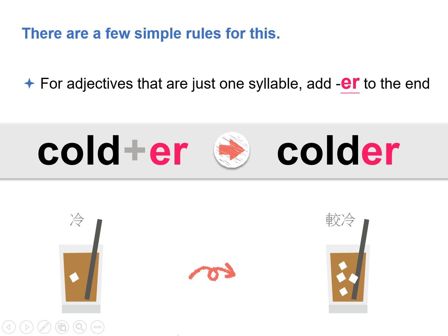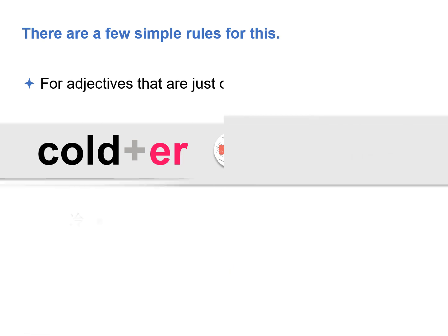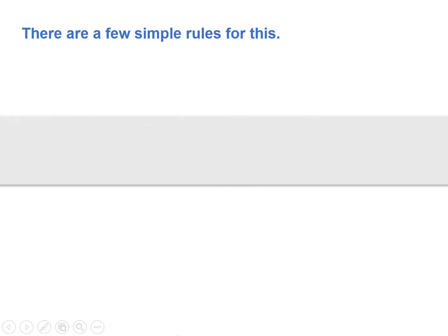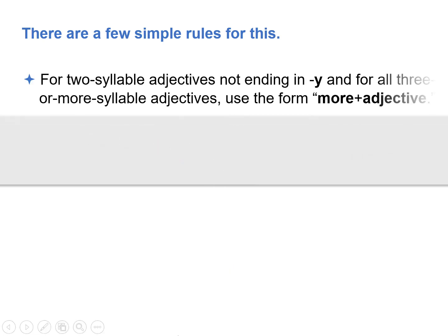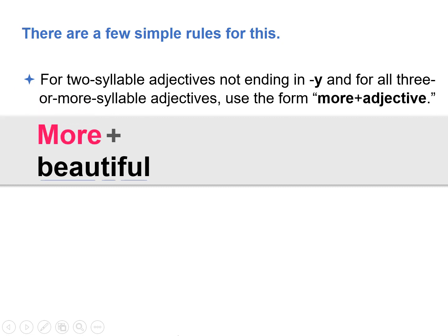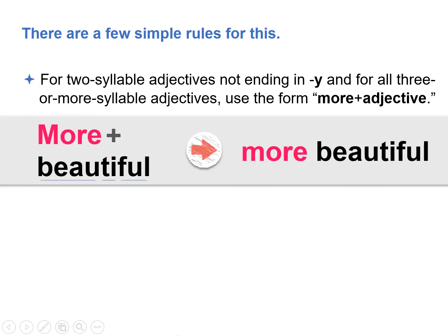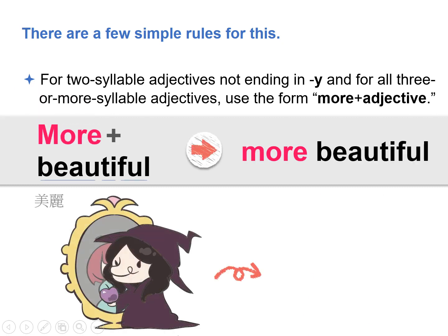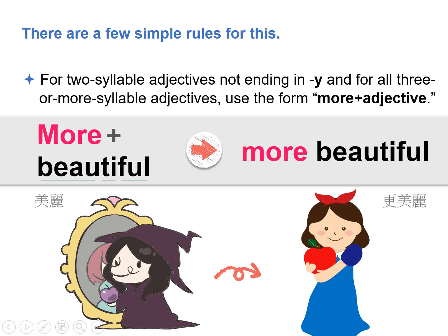For example: cold becomes colder. For two-syllable adjectives not ending in Y, and for all three or more syllable adjectives, use the form more plus adjective. For example: beautiful becomes more beautiful.